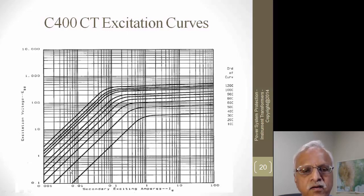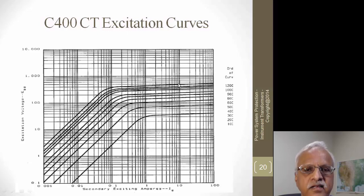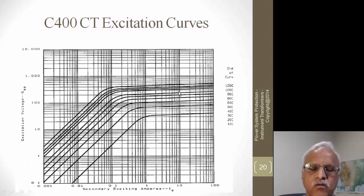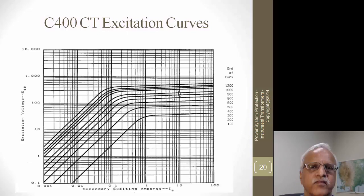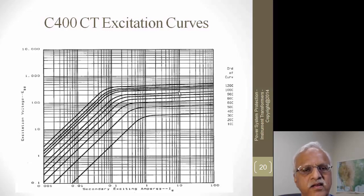CT manufacturers provide excitation curves. If 100 amps is flowing and the excitation current is 10 amperes, the voltage developed across the secondary is about 600 volts — meaning internally the CT can develop 600 volts and push 100 amps through the connected burden of 4 ohms in this case, with an accuracy error of 10 percent or less.